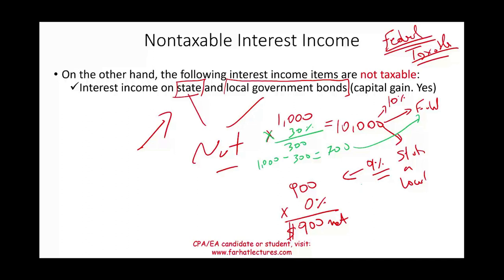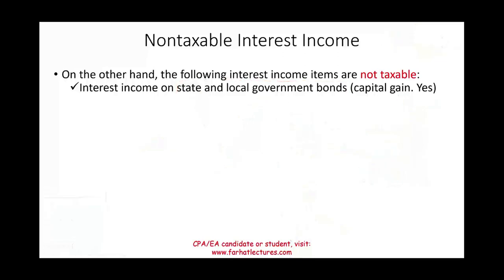Comparing the two options: lending to the state or local government earns you nine hundred dollars with zero tax — you keep all nine hundred. Lending to the federal government earns one thousand but after 30% tax you only net seven hundred. This is how the federal government encourages people to invest in state and local government, allowing those governments to raise money more easily despite being less powerful than the federal government.